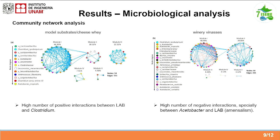We also constructed a bacterial network analysis. We built this network analysis — first for the model substrates and cheese whey on one side, and for the winery vinasses on the other side. In the first one, we observed a high number of positive interactions between lactic acid bacteria and Clostridium especially, which enhances hydrogen production. For the winery vinasses with low hydrogen potential, we observed many negative interactions within the microbial community, especially with Acetobacter and lactic acid bacteria. We think this could be amensalism — Acetobacter may be producing something affecting lactic acid bacteria — but this is still a hypothesis we have to prove.